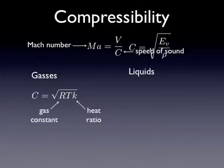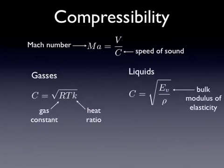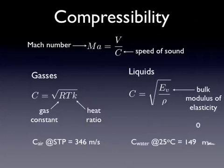You can also calculate the speed of sound in liquids, and you use a different equation. This relies on the bulk modulus of elasticity for the fluid, and that's also something you can look up. And the speed of sound in air at standard temperature and pressure is 346 meters per second, while in water it's over four times as fast. So as you know, sound travels much faster in water than in air.